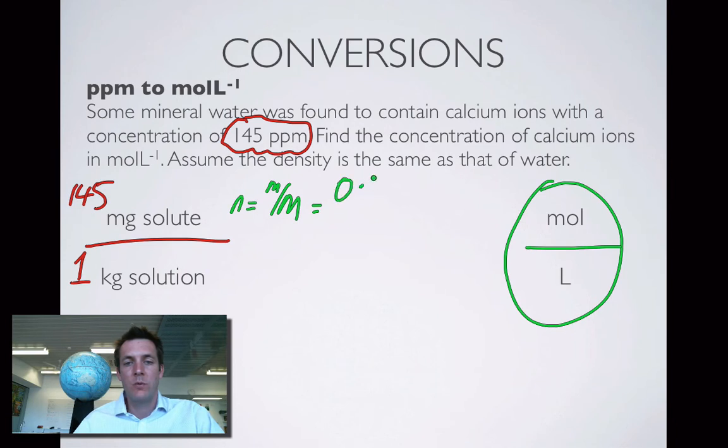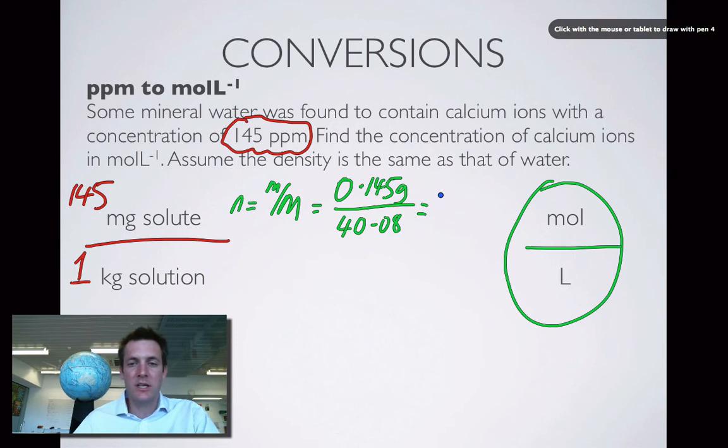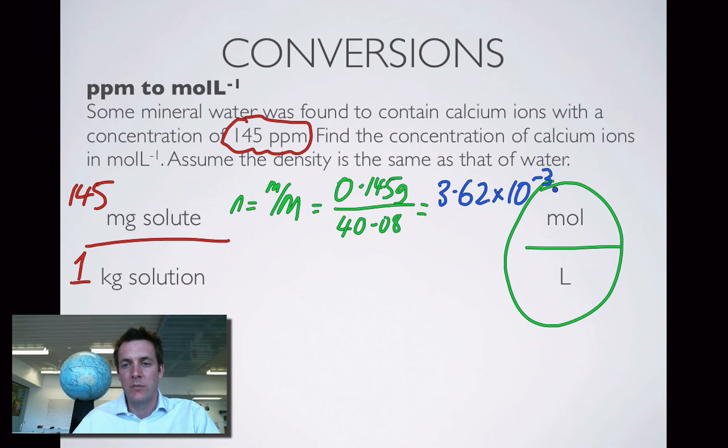So that's going to be 0.145 grams because there's 1,000 milligrams in a gram. And I'm going to divide that by calcium, which has a molar mass of 40.08. If I do that on my calculator, I find that that is 3.62 times 10 to the minus 3 moles.